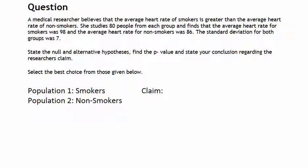Now writing the claim, and since the researcher believes that the smokers have a heart rate that's greater than the heart rate of the nonsmokers, the claim will be that the average for population 1 is greater than the average for population 2. Next, we write the opposite of the claim, which will be that mu 1 is less than or equal to mu 2.